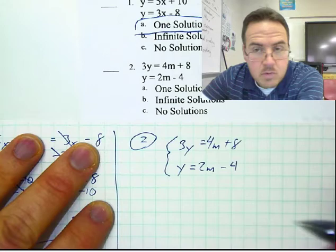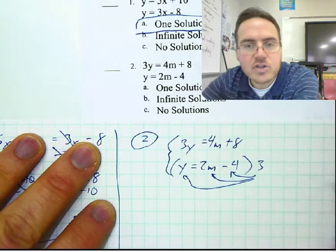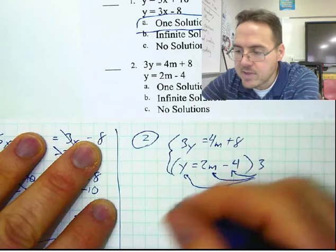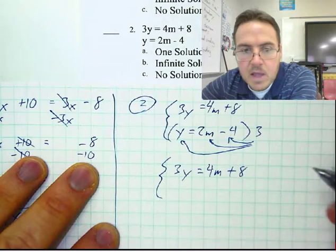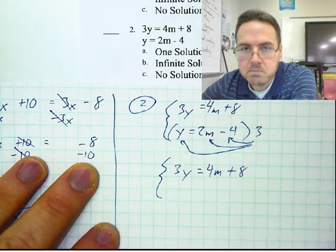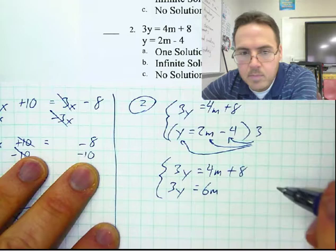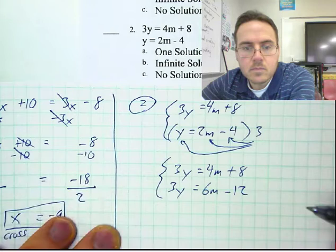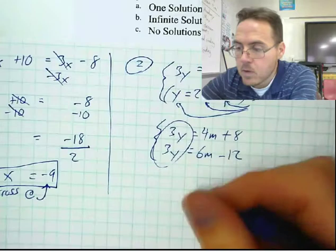If I multiply one side by 3, I have to multiply everything on the other side by 3 as well. I'm going to multiply every term by 3 — the Y, the 2M, and the negative 4. The top row did not change: 3Y equals 4M plus 8. The bottom row gets tripled: 3 times Y is 3Y — that's what we wanted. 3 times 2M is 6M. 3 times negative 4 is negative 12. Now they are both equal to 3Y, therefore the two sides are equal to each other: 4M plus 8 equals 6M minus 12.